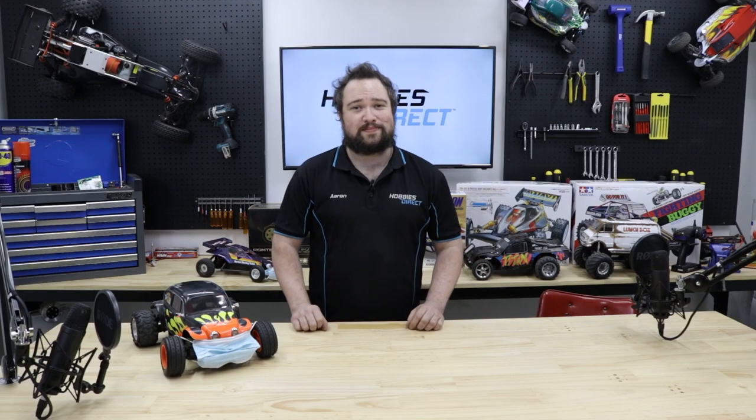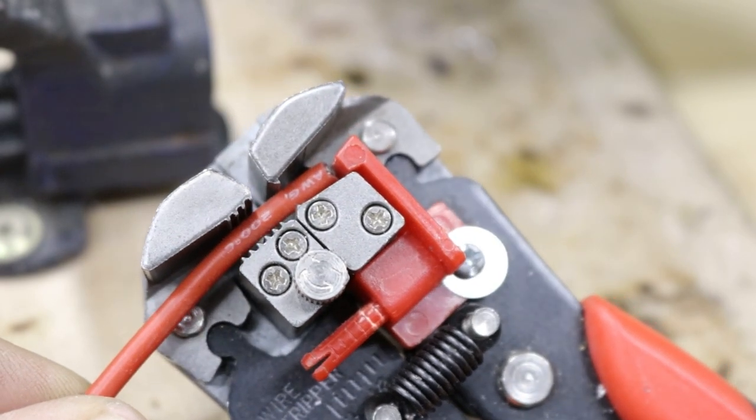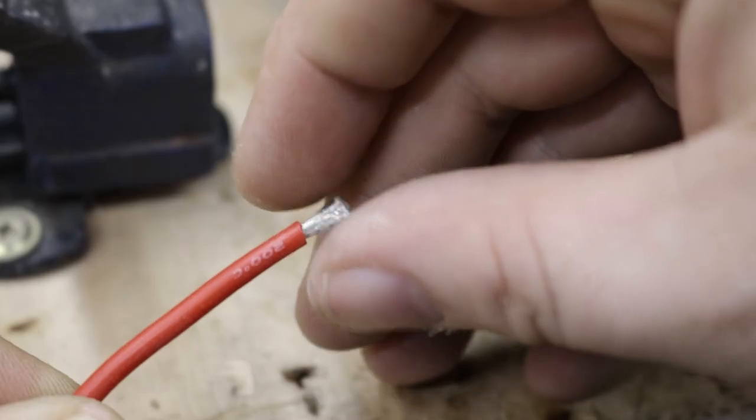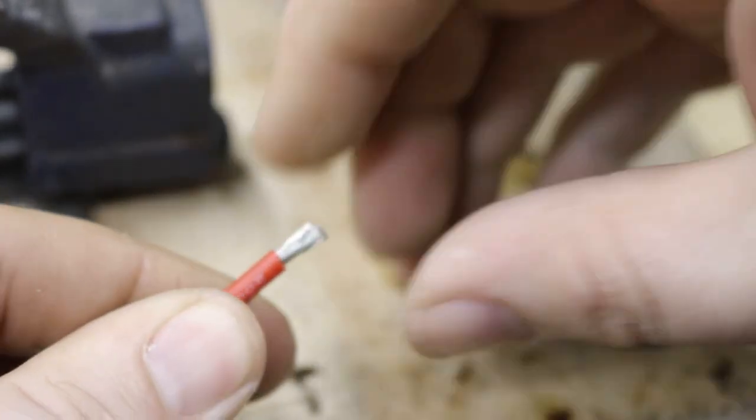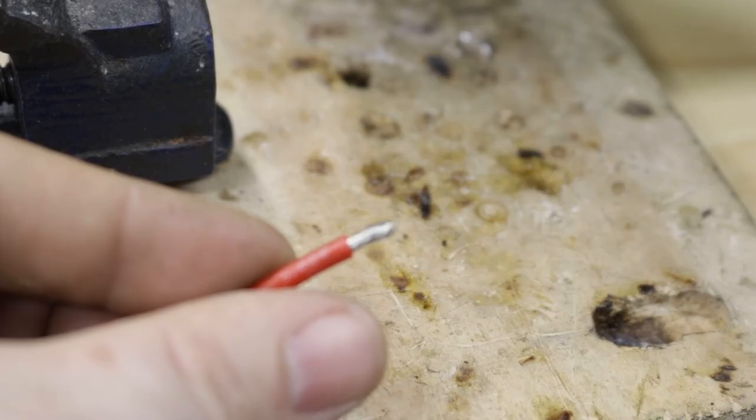Alright, let's get onto it. Using wire strippers, you want to take about five millimeters of the silicone insulating cover off. I then like to twist the wires together to make it neater and ensure there are no rogue wire strands.